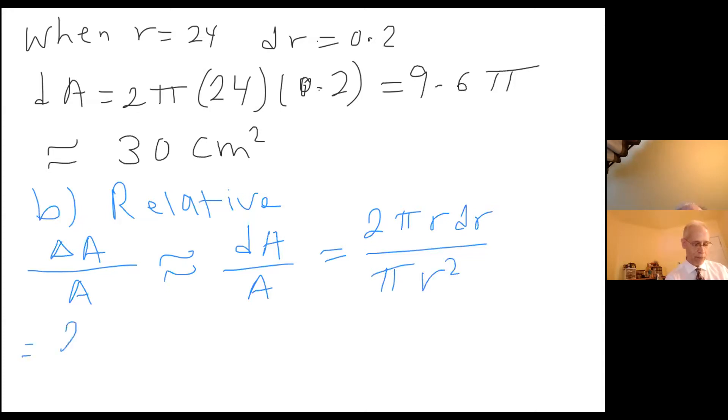I get 2 dr over r. And so this equals 2 times 0.2 divided by 24, which is approximately equal to 0.016. And so that's the relative error in calculating the area of the disk.